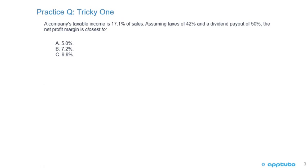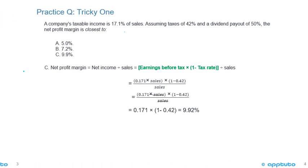Because this LOS was talking about forecasting net profit margin, we'll finish with one practice question — and it's a little bit tricky. A company's taxable income is 17.1% of sales. Assuming taxes of 42% and a dividend payout of 50%, the net profit margin is closest to: A) 5%, B) 7.2%, or C) 9.9%.